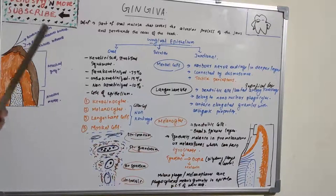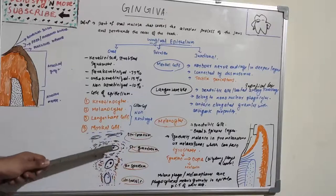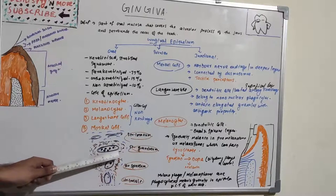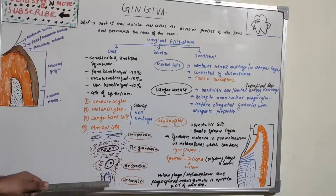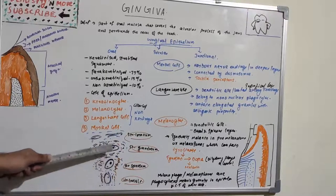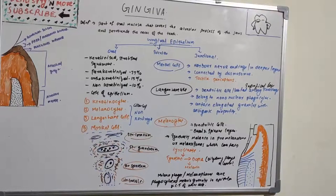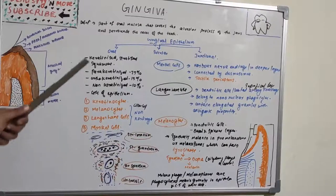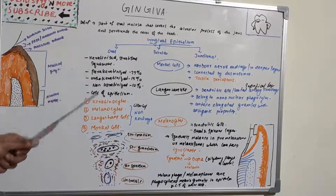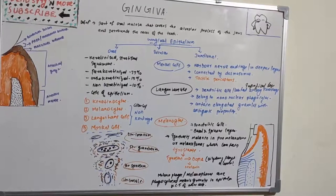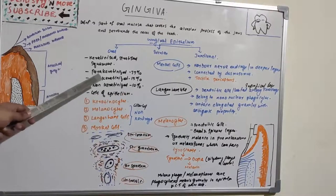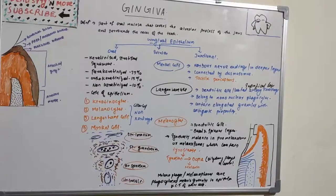Oral epithelium is keratinized, meaning it has four layers: stratum basale, stratum spinosum, stratum granulosum, and stratum corneum. The level of keratinization increases as it goes higher. The basal layer has cell multiplication, and as it goes higher, more keratinization occurs. Oral epithelium is keratinized, stratified squamous in nature, and has three types of keratinization: parakeratinized (75% of total oral epithelium), orthokeratinized (15%), and non-keratinized (10%).